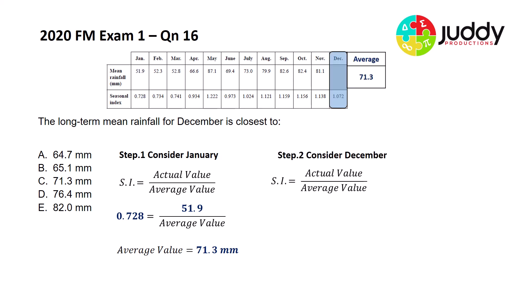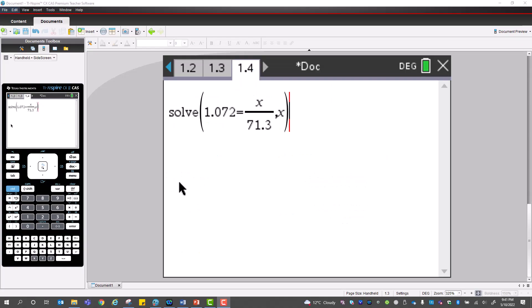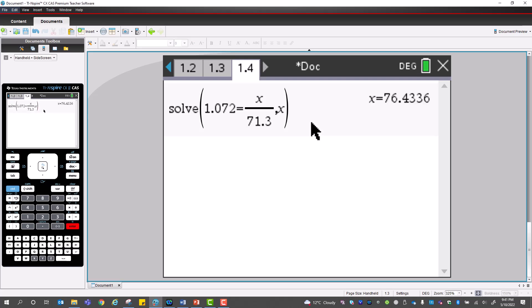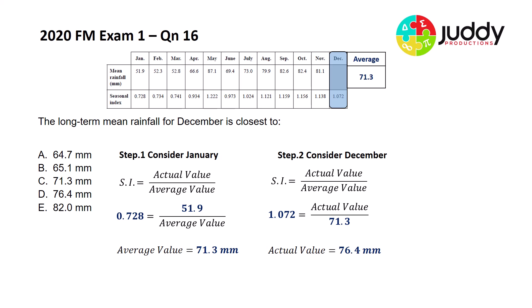Now for the December calculation: the seasonal index equals the actual value of that month divided by the average value for the entire year. We're trying to work out the mean rainfall for December, given a seasonal index of 1.072 and an average monthly rainfall of 71.3 millimeters. Substituting these values in and using the CAS calculator solve function with x as the unknown, we get an average December monthly rainfall of 76.4 millimeters, which is answer D.